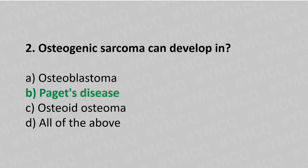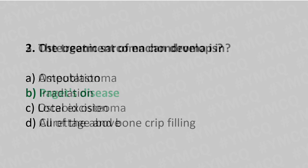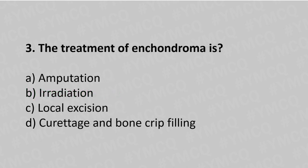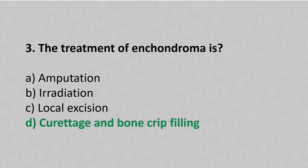Question number three: the treatment of enchondroma is option A amputation, option B radiation, option C curettage and bone chip filling, option D curettage and bone chip filling. The answer is option D, curettage and bone chip filling.